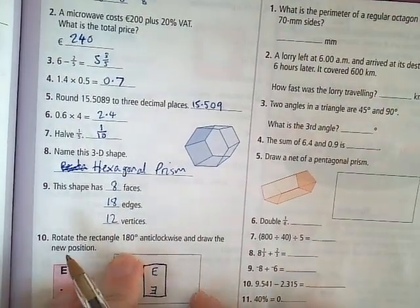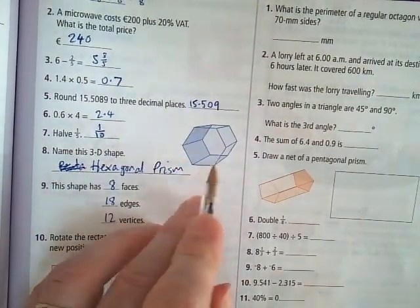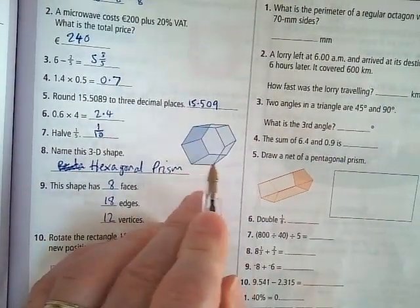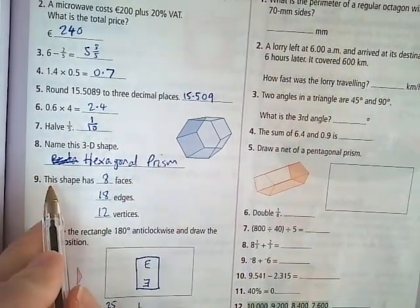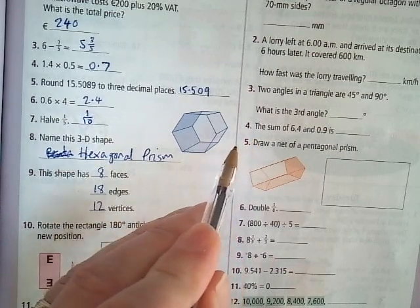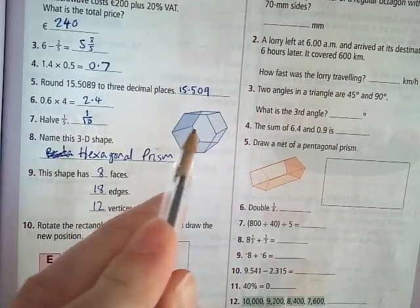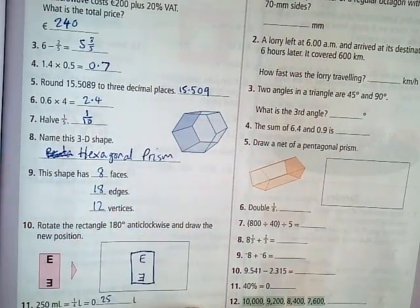Name this 3D shape. As you can see, I made a mistake here. I started to write pentagonal prism, but of course it's a hexagon on this side. So it's a hexagonal prism. And that shape has 8 faces: the 2 hexagon faces and then the 6 rectangular faces that join them up.